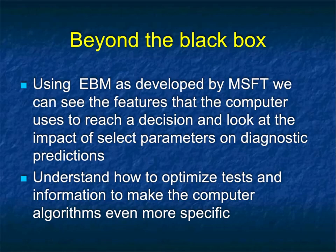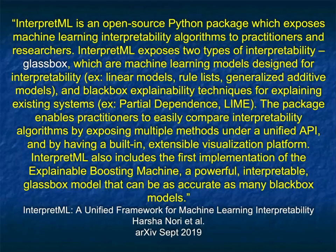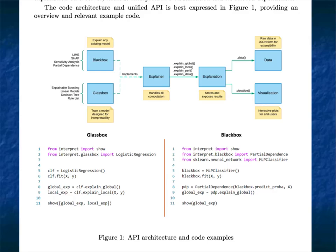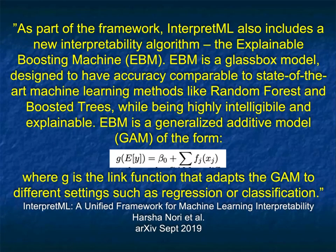Using these EBMs, we can see the features that the computer uses to make decisions and understand why these decisions are made. It will also help us optimize tests and information to make the computer programs even more specific. This InterpretML is a unified framework for machine learning interpretability. The glass box technique is very important because the accuracy is the same as a black box, but we understand what's going on. People are going to feel much more comfortable when they know how the computer is making the decision. With the glass box you can add or subtract parameters and see precisely your results.